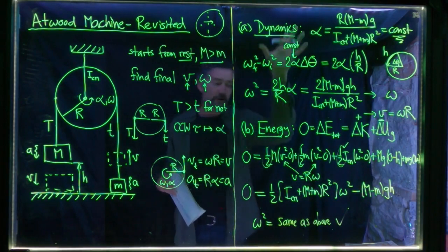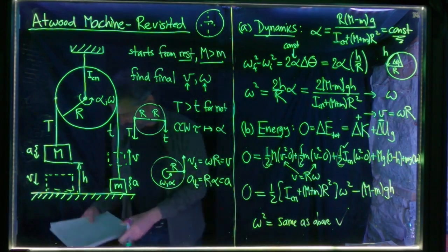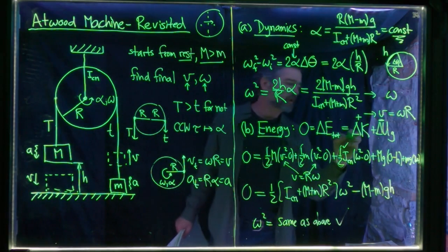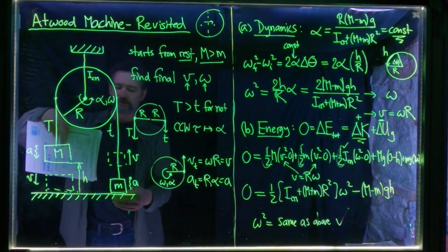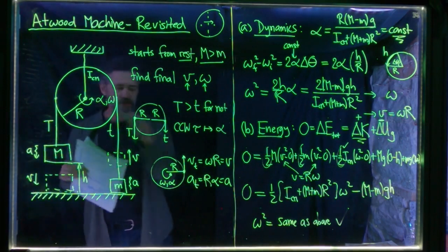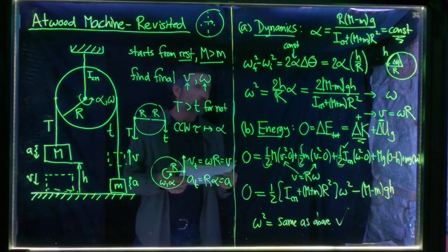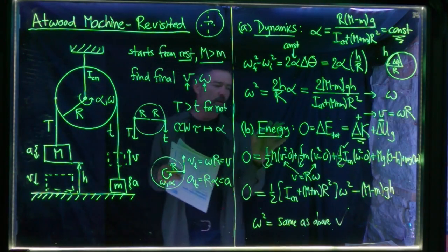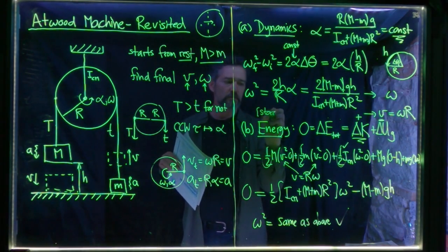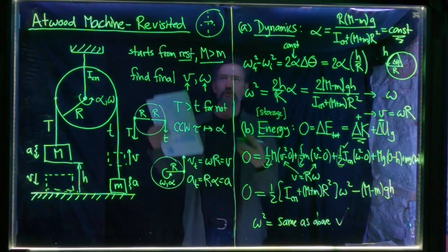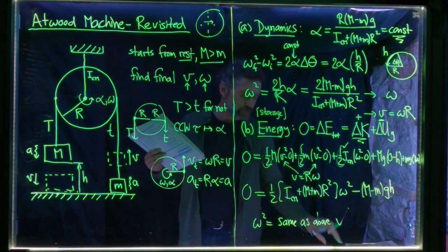The dynamics approach involved a fair bit of work — free body diagrams, equations, kinematics. The conservation of energy approach involves almost no work; it's very easy. The crucial thing is that when talking about changes in kinetic energy, we now consider not just kinetic energy of masses in translational motion but also kinetic energy of masses in rotational motion. This is conservation of energy from the point of view of storage.